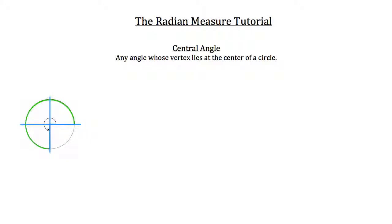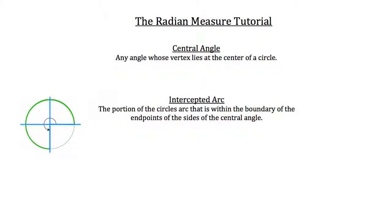An important aspect of circles and central angles is arcs, and their intercepted arcs. An intercepted arc is the portion of the circle's arc that is within the boundary of the endpoints of the sides of the central angle. If our central angle had these two sides, then the portion of the circle's arc within the boundary of those endpoints is the green portion of the arc — that's all inside this angle.